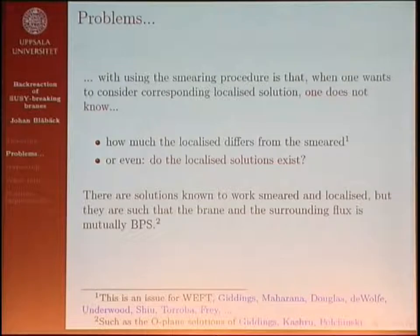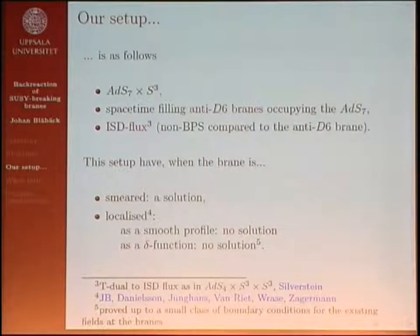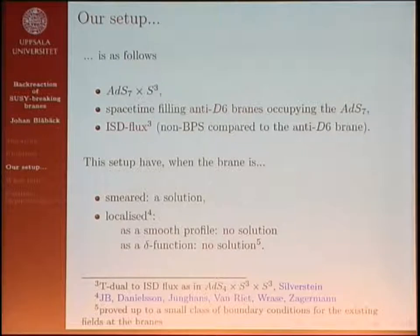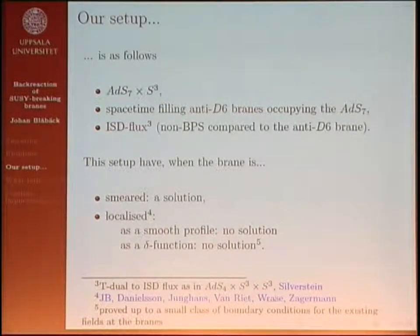There are solutions known to work both smeared and localized, but they are all such that the surrounding flux is mutually BPS with the source. Such a case is the O-plane solutions of GKP. Our setup is AdS_7 times S^3, filled with an anti-D6-brane, which gives rise to an ISD flux — imaginary self-dual. This means that if we dualize down to four-dimensional anti-de Sitter, the fluxes would be imaginary self-dual. This flux is non-BPS compared to the anti-brane.